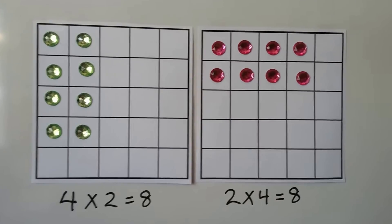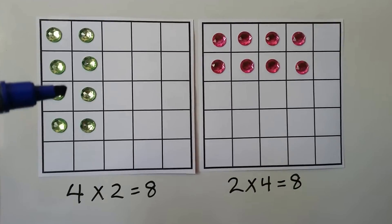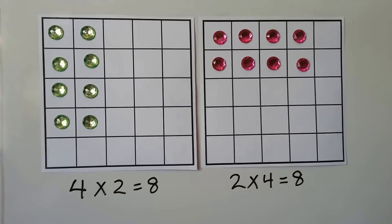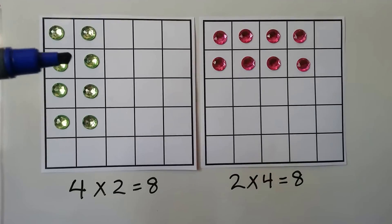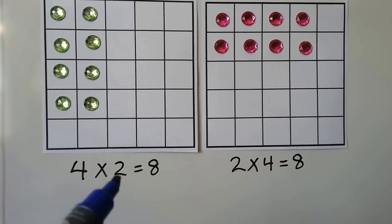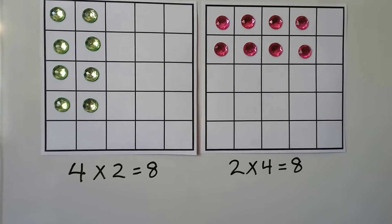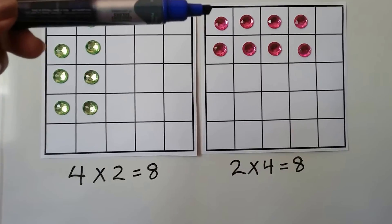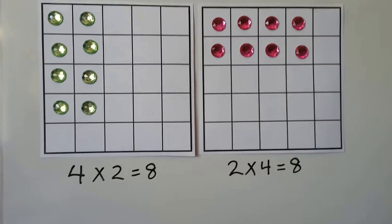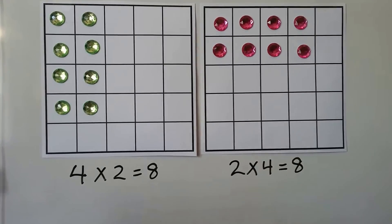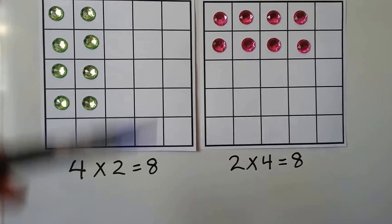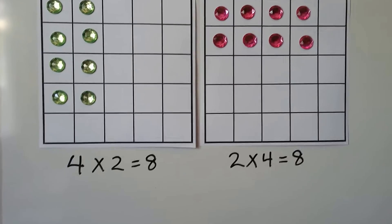Look at these two grids. We've got 1, 2, 3, 4 rows of 2. This is 4 times 2. There's 2 in each row, so that's 4 times 2, which equals 8. And if we have 2 rows that have 4 in them, we still have 8. We could do 2 plus 2 plus 2 plus 2, and that's going to equal 8. Or we could do 4 plus 4, and that's going to equal 8.